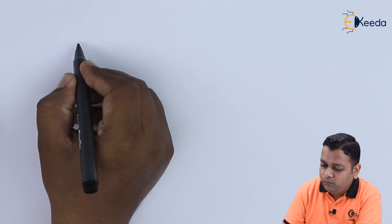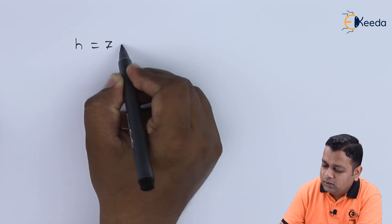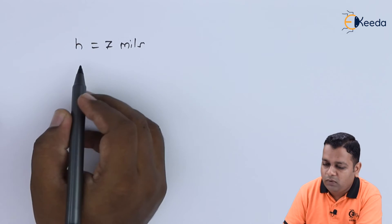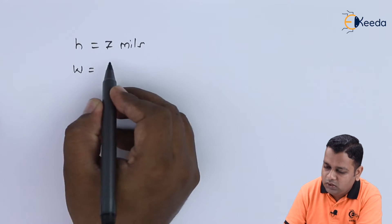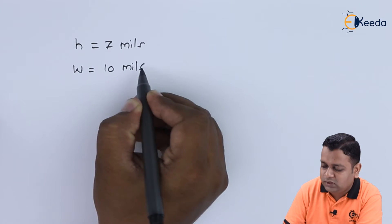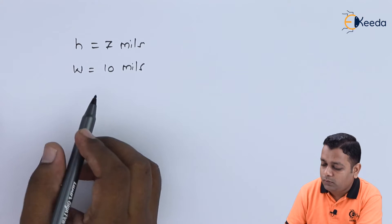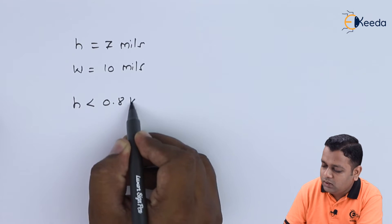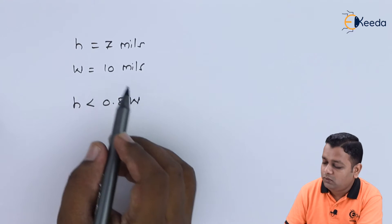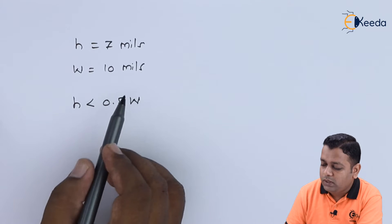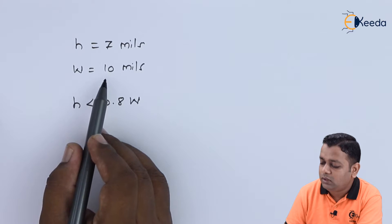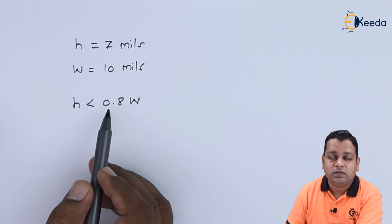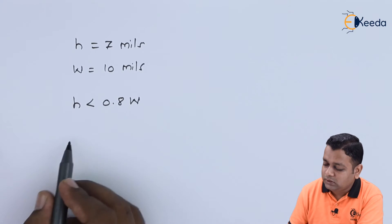Looking at the given values, h = 7 mils and w = 10 mils. We check the condition: is h less than 0.8 times w? Since 0.8 × 10 = 8.0, and 7 is less than 8.0, this condition is satisfied. In this situation, we use the appropriate characteristic impedance formula derived in the previous video.